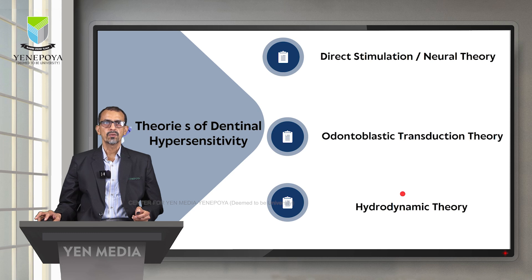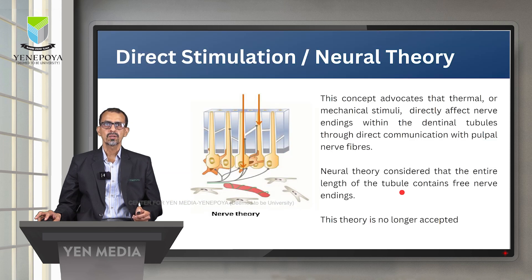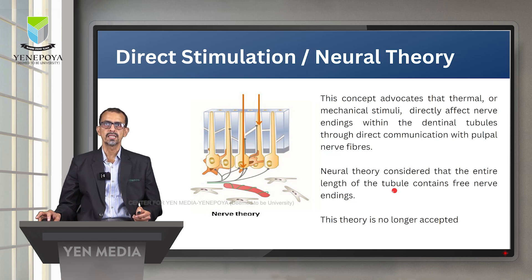There are a few theories which explain the way in which dental sensitivity is initiated. The important ones are the direct stimulation or neural theory, the odontoblastic transduction theory, and the hydrodynamic theory. The neural theory advocates that thermal or mechanical stimuli directly affect the nerve endings within the dental tubules through direct communication with the pulpal nerve fibers. This theory considered that the entire length of the tubule contains free nerve endings, but it is no longer accepted.